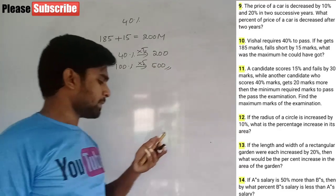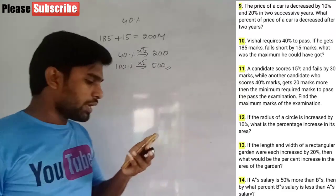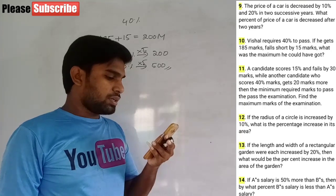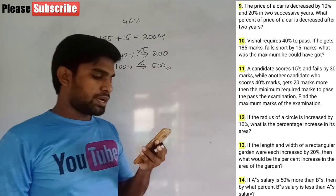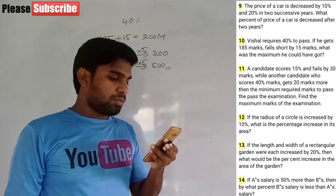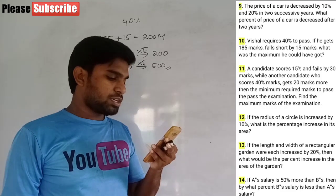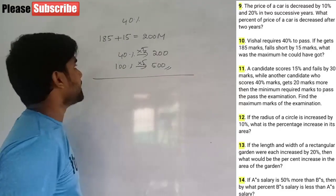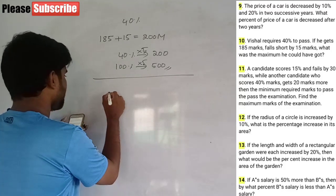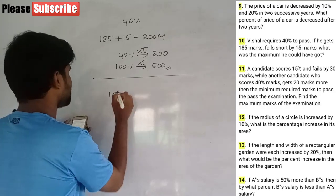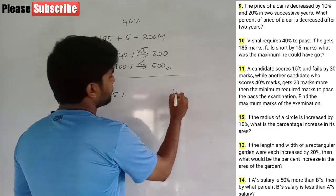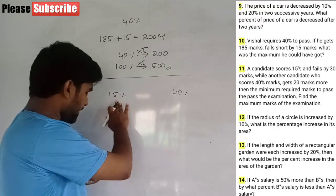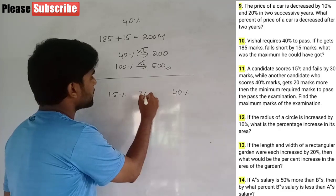Question 11: a candidate scores 15% and fails by 30 marks. Another candidate who scores 40% gets 20 marks more than the minimum required to pass. Find the maximum marks. First candidate: 15% — fails by 30 marks.